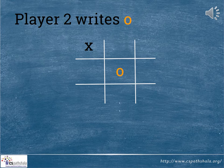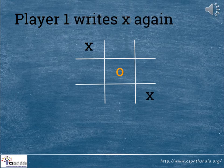Now, player 2 writes a knot. This player has put the knot bang in the middle. Player 1 writes a cross again. This time, he has put the cross in the bottom right corner.